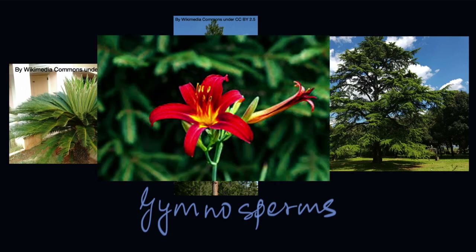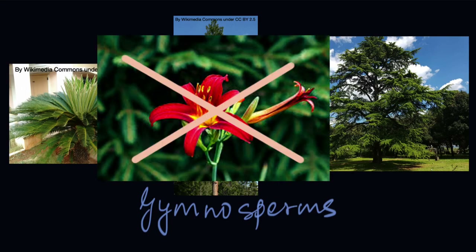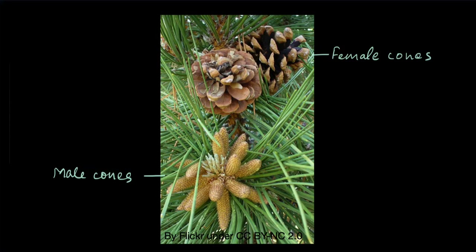Gymnosperms are a group of plants that do not produce flowers, so how do they reproduce? Their reproductive organs are the cones. There are two types of cones in every gymnosperm: the female cones and the male cones. We already have a video on the male cone, and in this video we are going to look at the female cone and explore how reproduction happens in gymnosperms. This is a female cone.